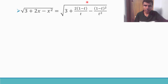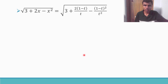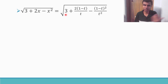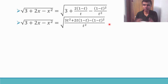So we have 3 plus 2(1 minus t)/t minus (1 minus t)² / t². To combine these, take LCM as t squared. The first term becomes 3t²/t², the second term becomes 2t(1 minus t)/t², and the third term stays as (1 minus t)²/t². So the numerator is: 3t² plus 2t(1 minus t) minus (1 minus t)².